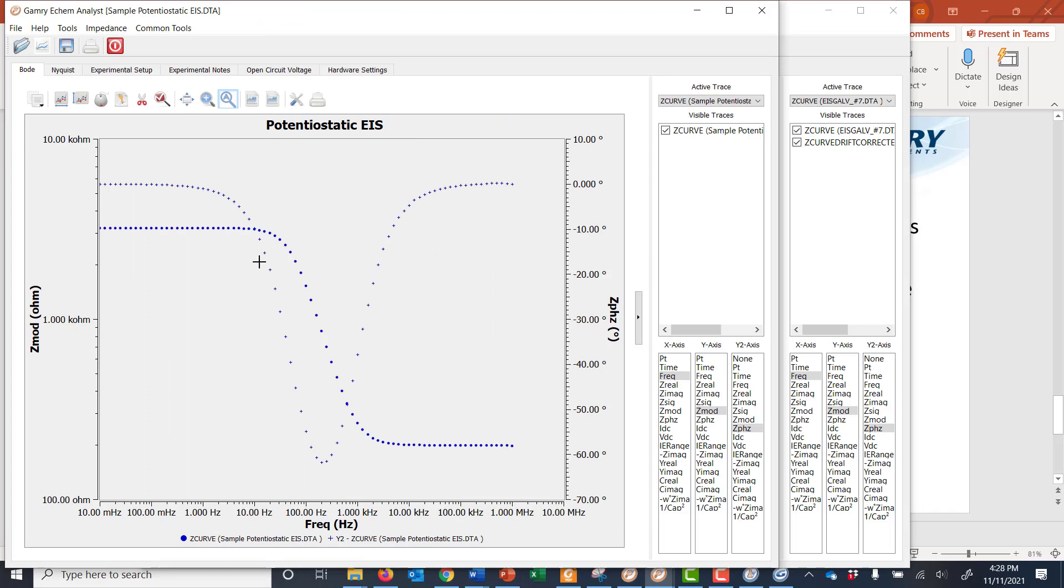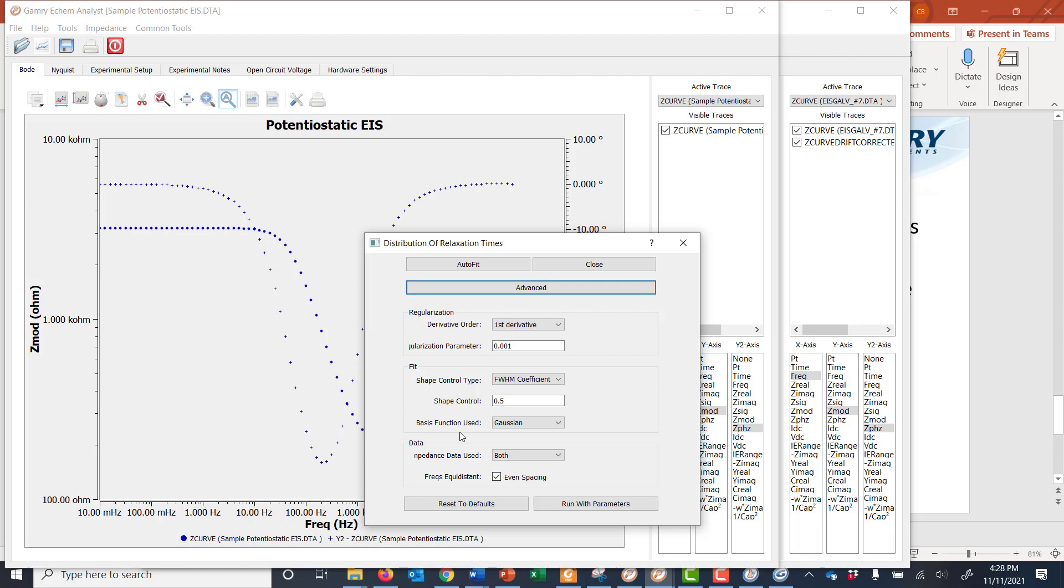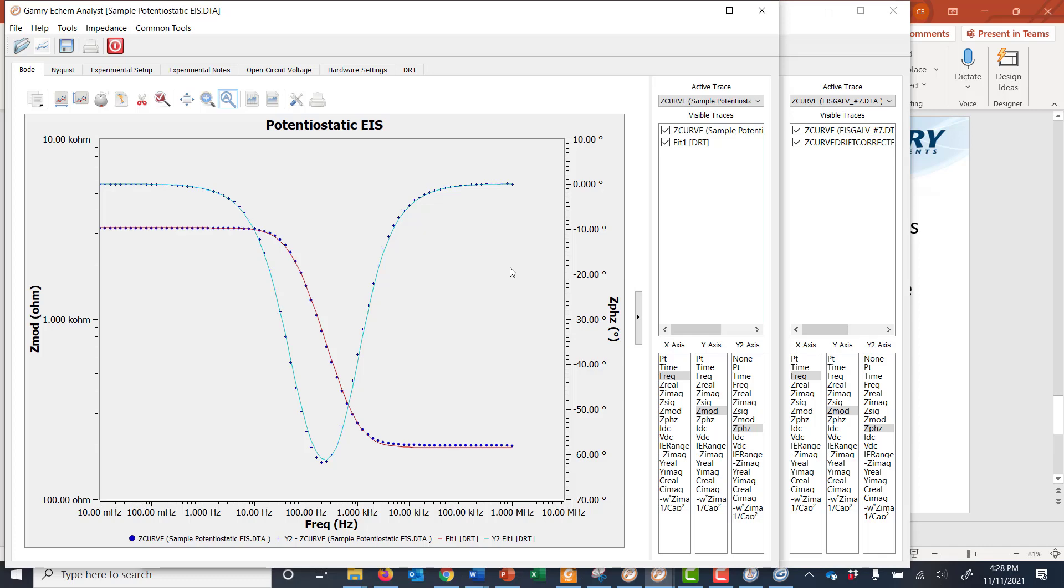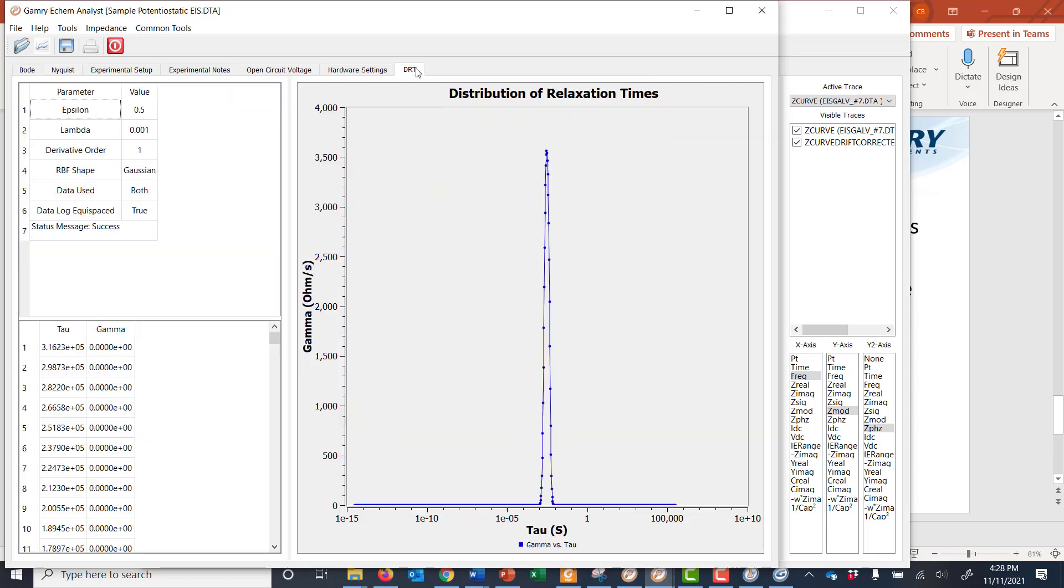And as you can see, this data is of a dummy cell. So a single RC time constant, dummy cell. It's a simplified Randles cell. If you go to impedance and you do distribution of relaxation times, you can choose to do auto fit. There are some advanced parameters that you can change here. But I'm just going to choose to do auto fit to show you what this looks like. We add a tab over here. And then we make a plot of the distribution of relaxation times. And so here's your time domain data. Single peak, single RC time constant.